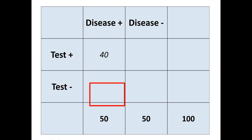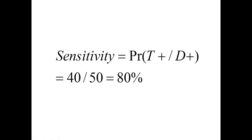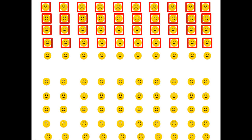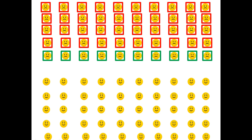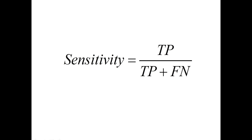Looking at our 2x2 table, we have 40 people who had the disease and tested positive out of 50. Sensitivity equals the probability that you will test positive given that you have a disease. In this case, it's 40 out of 50, so our estimate of sensitivity is 80%. Sensitivity can also be thought of as the true positive rate. The remaining 10 people with the disease tested negative — these subjects are considered false negatives. So sensitivity can also be expressed as the ratio of true positives to true positives plus false negatives.